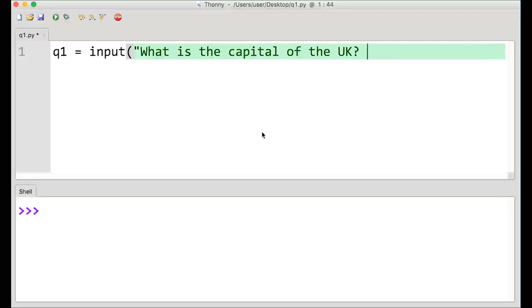OK, so that's the question. And what we need to do then, of course, is to test whether the user has put the right answer in. And to do that, we've got an if statement here to begin with. And we want to say if q1, which is the variable, if q1 is equivalent to the correct answer, which we know is London.